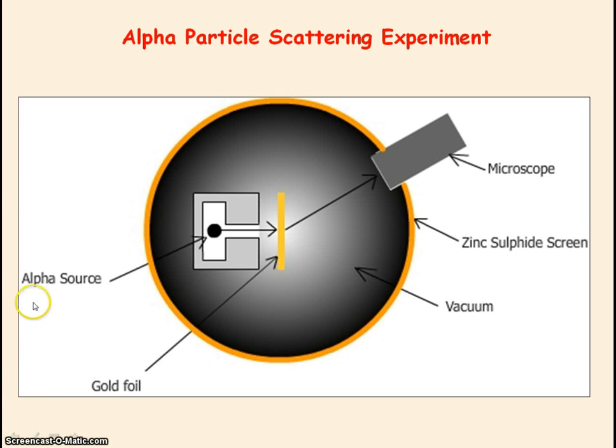The experiment involved firing very high energy alpha particles in a vacuum at a very thin gold foil. They needed a vacuum so that the alpha particles would travel unobstructed to the gold foil with no collisions with any air molecules.